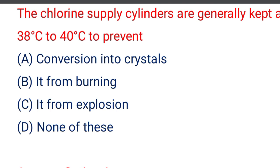Next question: chlorine supply cylinders are generally kept at 38°C to 40°C to prevent — option A conversion into catalyst, option B its form burning, option C its form explosion, option D none of the above. The correct answer is option A, conversion into catalyst.